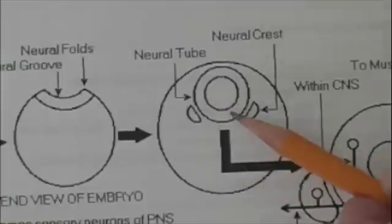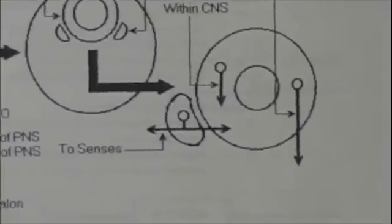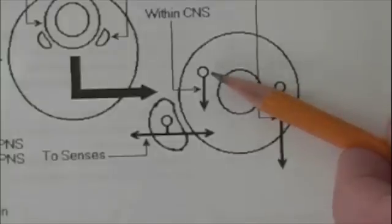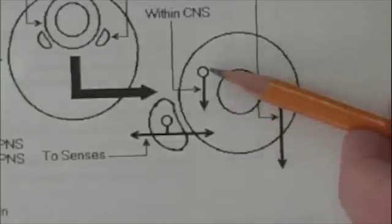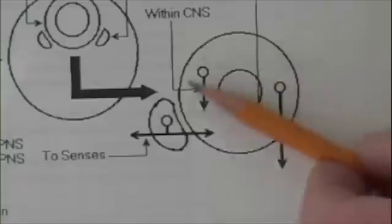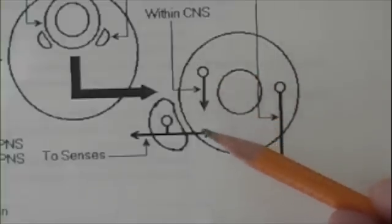If we enlarge the neural tube and the neural crest, we see this. Here's the neural tube. Here's one of the neural crest regions. Within the central nervous system, neurons develop which are totally inside the central nervous system. We call these interneurons.